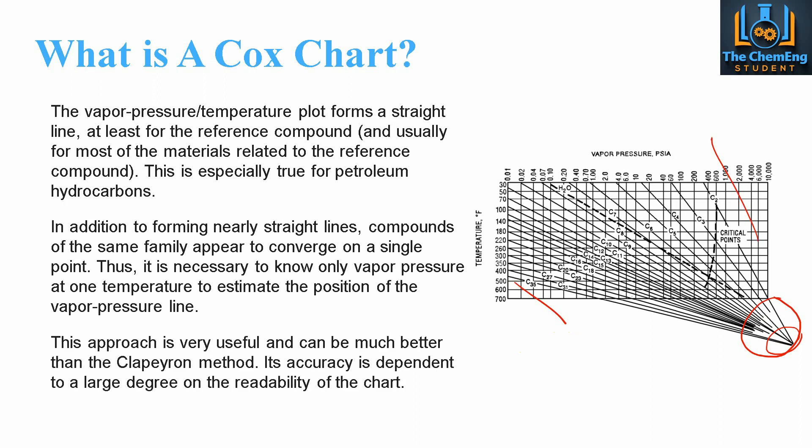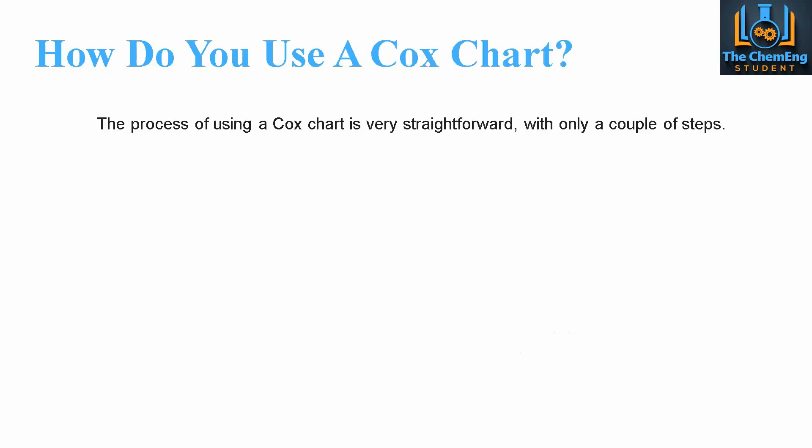This approach is very useful and can sometimes be better than the Clapeyron method. Rather than using the Clausius-Clapeyron equation, we can use a Cox chart in order to determine the vapour pressure of a pure substance at a fixed given temperature.